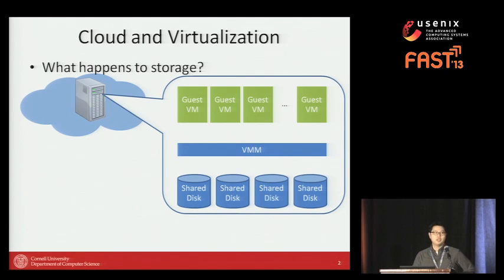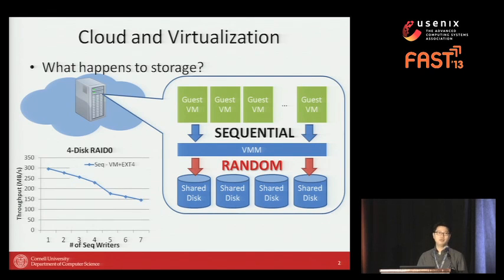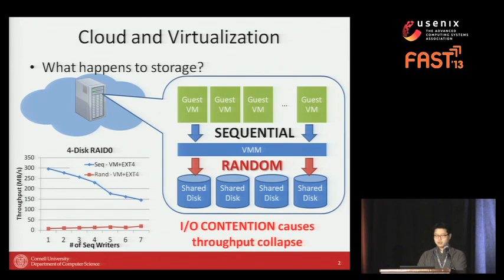For example, if all the guest virtual machines issue sequential requests, assuming they will get maximum throughput out of the virtual disk, that won't happen — because inside the virtualization layer, these sequential requests will be mixed, and what the physical disk actually sees is a random mix of these sequential streams. I/O contention among virtual machines can cause overall throughput to collapse.